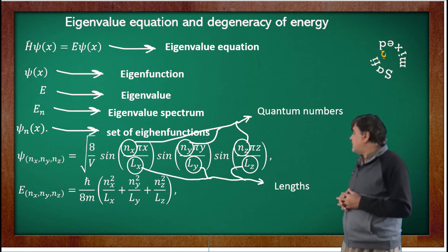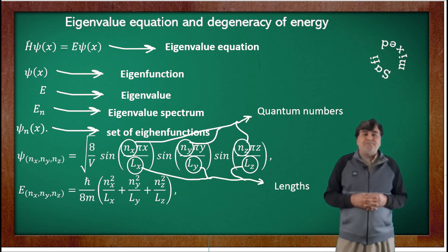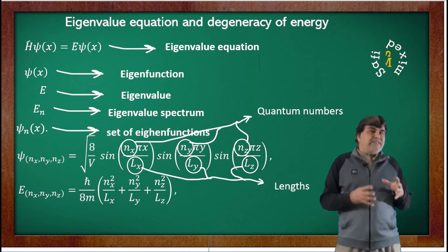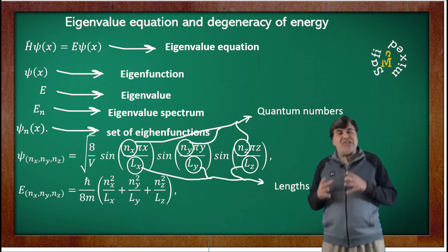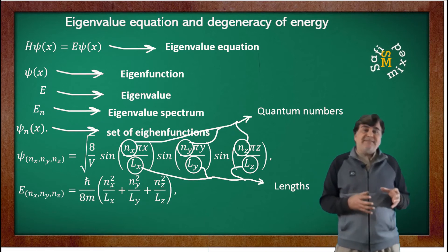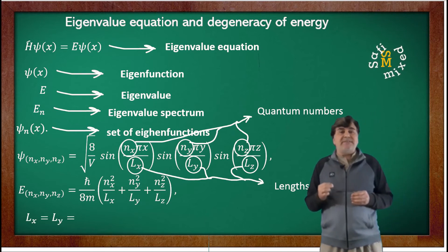Now, if the three-dimensional box is a cube, in such cases the lengths along the three axes are equal, and we can replace L_x = L_y = L_z, all equal to L.